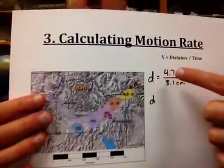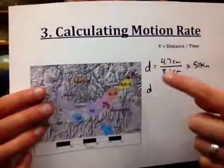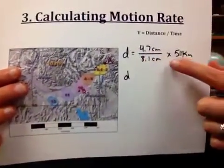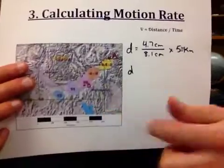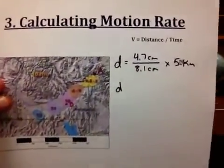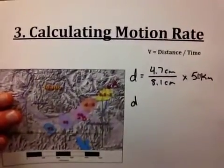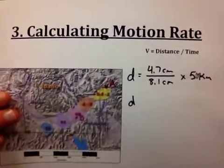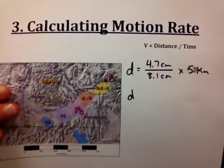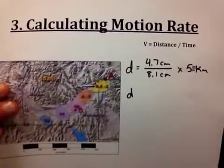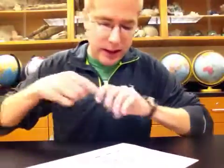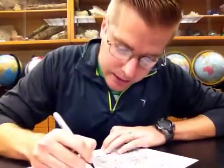Our distance is A to B on the map was 4.7 centimeters divided by the width of the scale, 8.1 centimeters, times the number on the end of the scale, which is 500 kilometers. We can go ahead and plug this into a calculator. So we have 4.7 divided by 8.1 times 500. And what we find is that our distance A to B, I'm going to round it, is 290 kilometers.